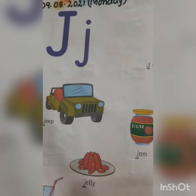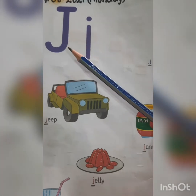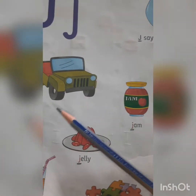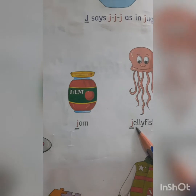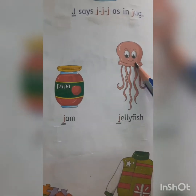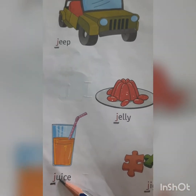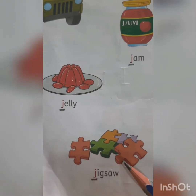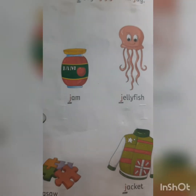Let's see the next letter — which letter is this children? This is letter J. Capital J. This is small j. What is the sound of letter J? It is 'J' in jug. J-U-G. Jug. J-E-E-P. Jeep. J-A-M. Jam. J-E-L-L-Y-F-I-S-H. Jellyfish. J-U-I-C-E. Juice. J-I-G-S-A-W. Jigsaw. J-A-C-K-E-T. Jacket. So let's see the next letter.